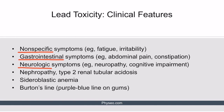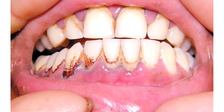Exposure to lead can also lead to nephropathy, type 2 renal tubular acidosis, and sideroblastic anemia, which is a type of microcytic anemia. Physical exam of patients with lead toxicity can reveal a Burton's line, which is a purple-blue line on the gums. Here we see an example of Burton's line, as it appears in a patient with chronic lead poisoning.